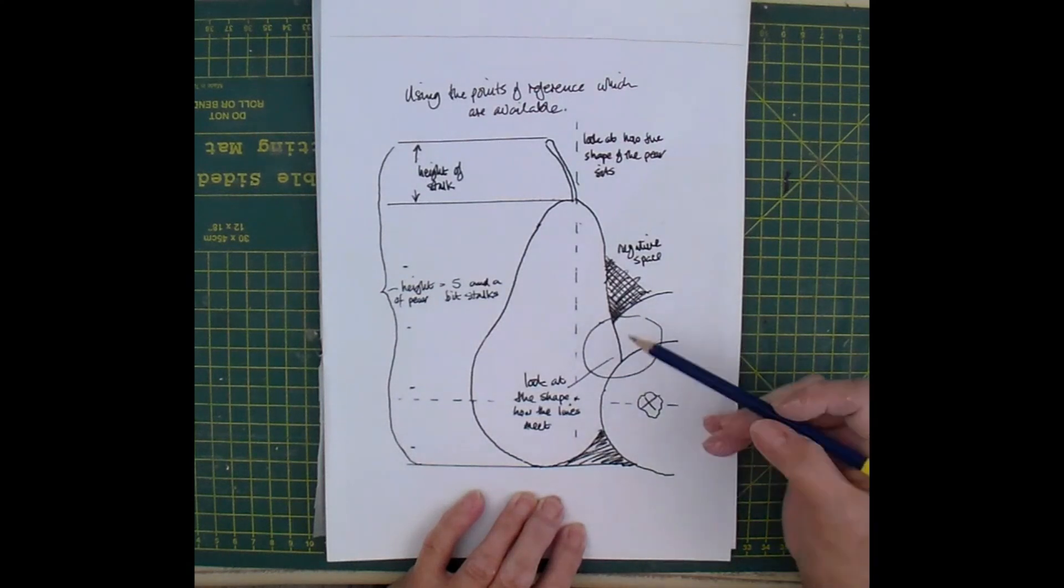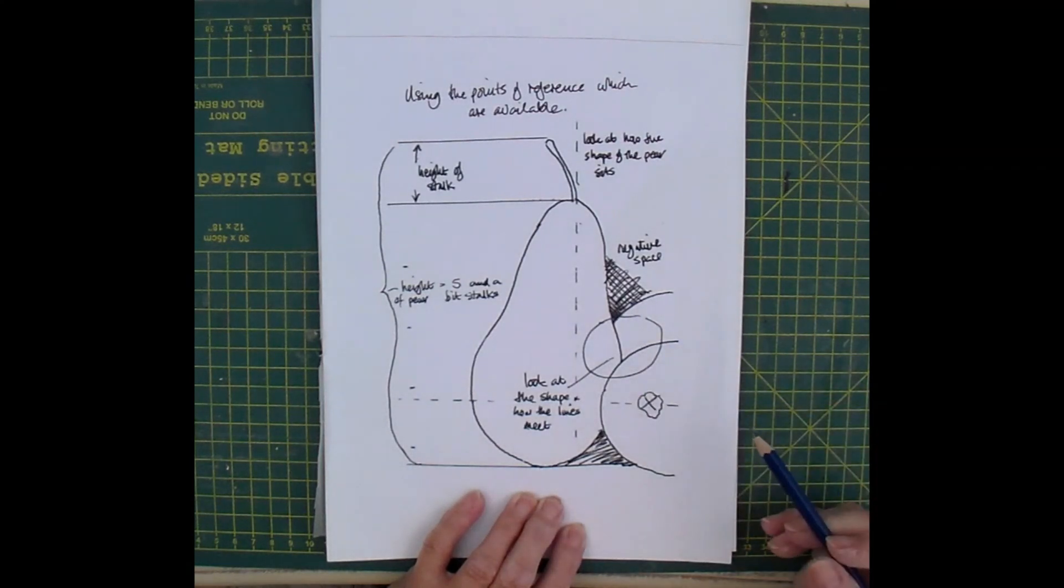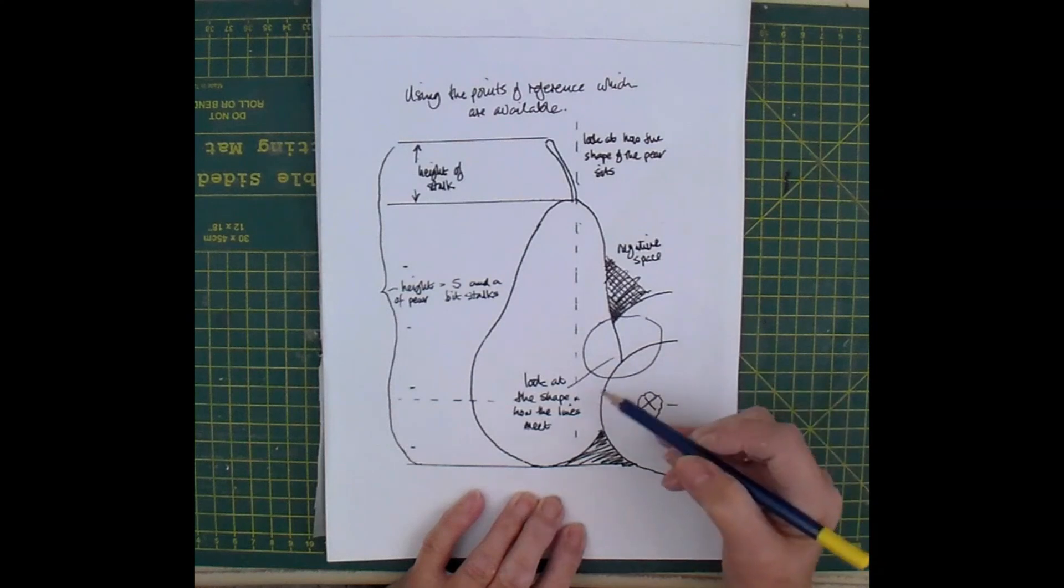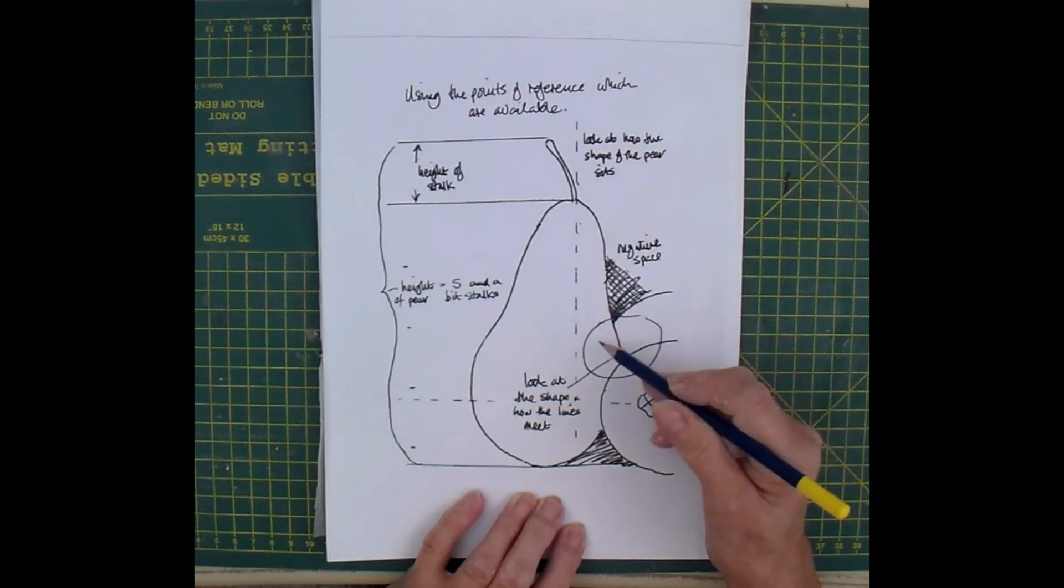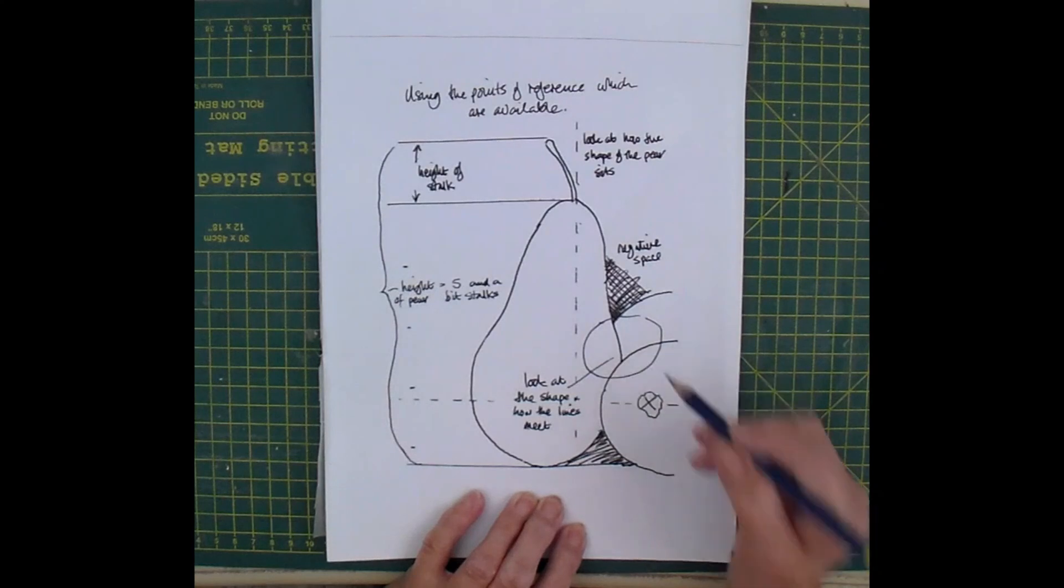And look at that shape that it's given you, okay? It's like a Y. It's like a circle divided into three parts.